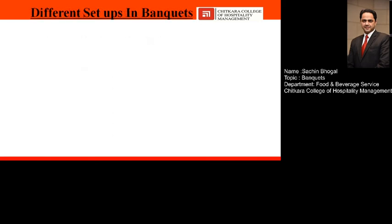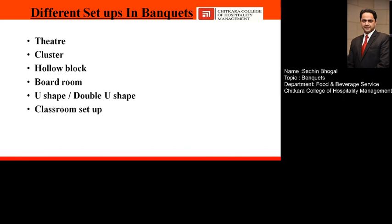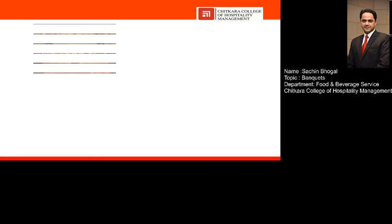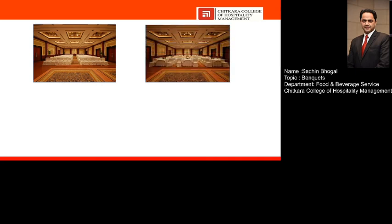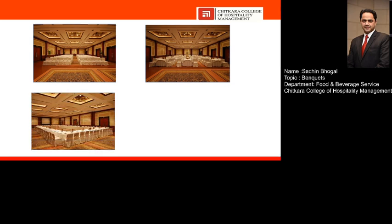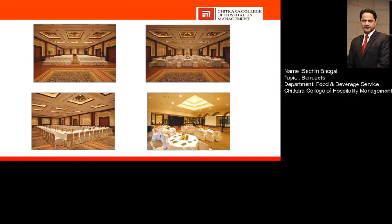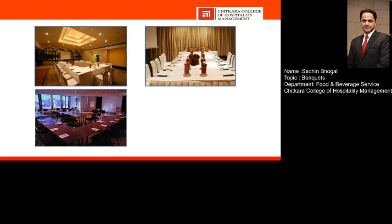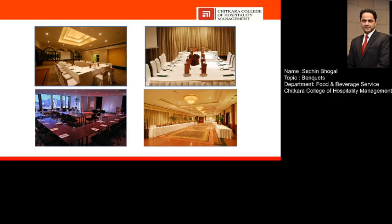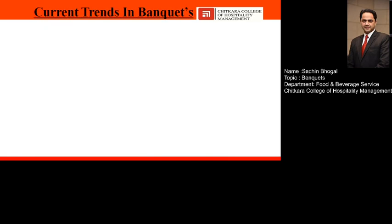The basic setups used in banquets include theatre, cluster, hollow block, boardroom, U-shape, W-shape, classroom, and auditorium setup. In theatre style, all seats face the screen. In cluster setup, a round table is placed in the center with chairs facing the screen. Pictures of these setups from the Oberoi New Delhi Hotel illustrate each arrangement including U-shape, boardroom, and W-shape configurations.